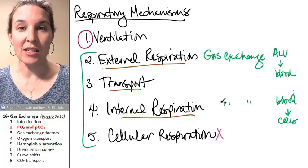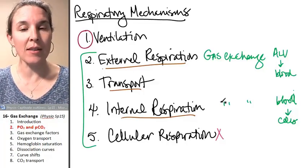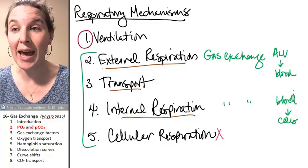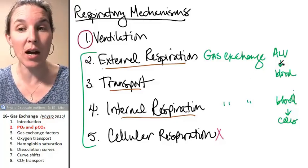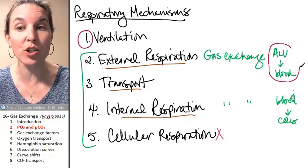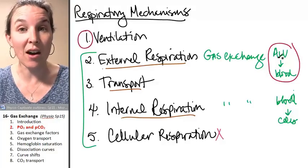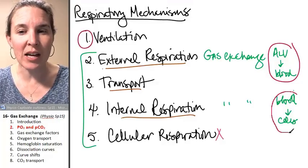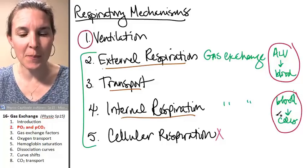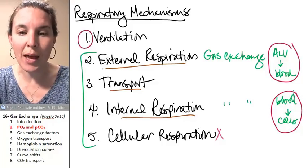If we want any kind of gas exchange to happen at all, then the bottom line is we are going to have to set up some kind of partial pressure gradient between the alveoli and the blood, and the blood and the body cells.